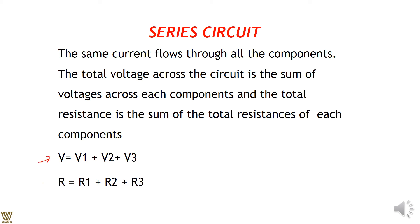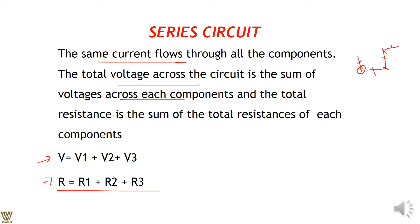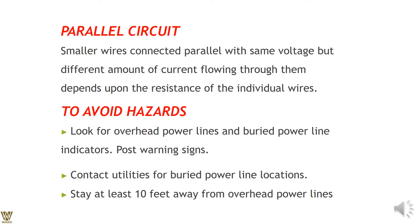In a series circuit, the same current flows through all components. The total voltage across the circuit is the sum of the voltages across each component: V = V1 + V2 + V3. The total resistance is the sum of all individual resistances: R = R1 + R2. Wires at every corner of the circuit get stressed. In a parallel circuit, smaller wires connect in parallel with the same voltage but different amounts of current.